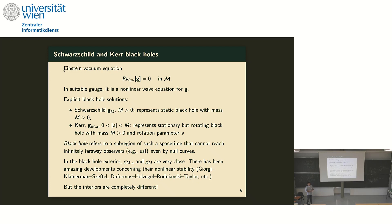A black hole refers precisely to a sub-region of such a spacetime that cannot send a signal to infinitely far-away observers, even at the speed of light. These spacetimes represent isolated astrophysical bodies, so mathematically we think of asymptotically flat solutions: as the radius gets large, the metric looks more and more like flat Minkowski spacetime. We — far away on Earth seeing the black hole — are effectively at infinity from the spacetime's point of view.